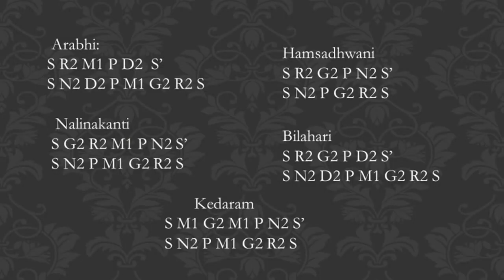What is Mela? The idea is actually quite simple — we are talking about grouping and classifying ragas. Take this group of ragas: Aarabhi, Hamsidhvani, Nadinakanti, Bilahari, and Kedharam. The aroha of these ragas, as you can see in the slide, use swaras that belong to the major scale or the Dhirashankarabhanam scale. They do not use all the swaras but they use some of the swaras that occur in the Shankarabhanam scale.